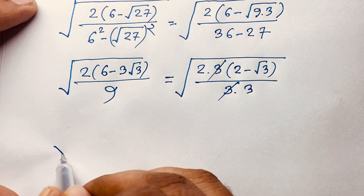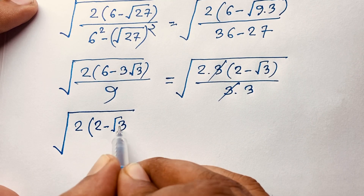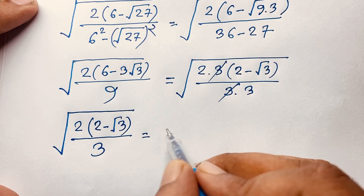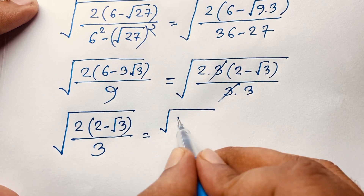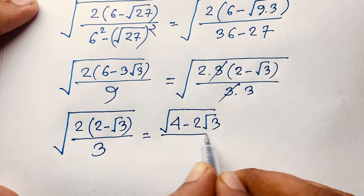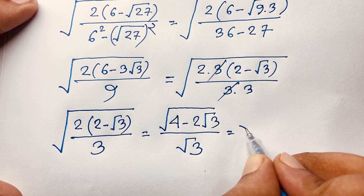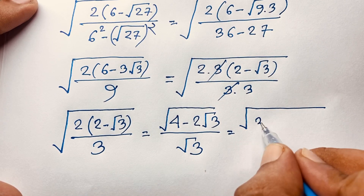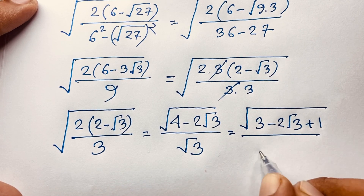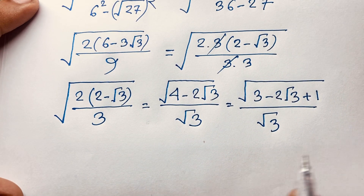We now have square root of 2 times (2 minus square root 3) over 3. Separating the fraction: 2 times 2 equals 4, minus 2 times square root 3 equals 2 square root 3, over square root 3. Rewriting the numerator: 4 minus 2 square root 3 becomes 3 minus 2 square root 3 plus 1.